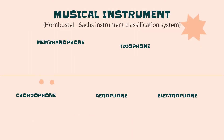The Hornbostel-Sachs instrument classification system was created by Eric Moritz von Hornbostel and Kurt Sachs. Among ethnomusicologists, it is the most widely used system for classifying musical instruments.